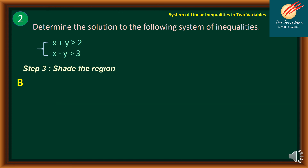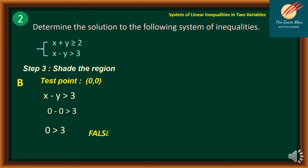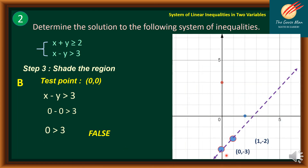For the shading step, we test point (0, 0) in x minus y > 3: 0 minus 0 = 0, and 0 > 3 is a false statement. Looking at the graph, (0, 0) is not part of the solution set, so we shade the lower part of the line.